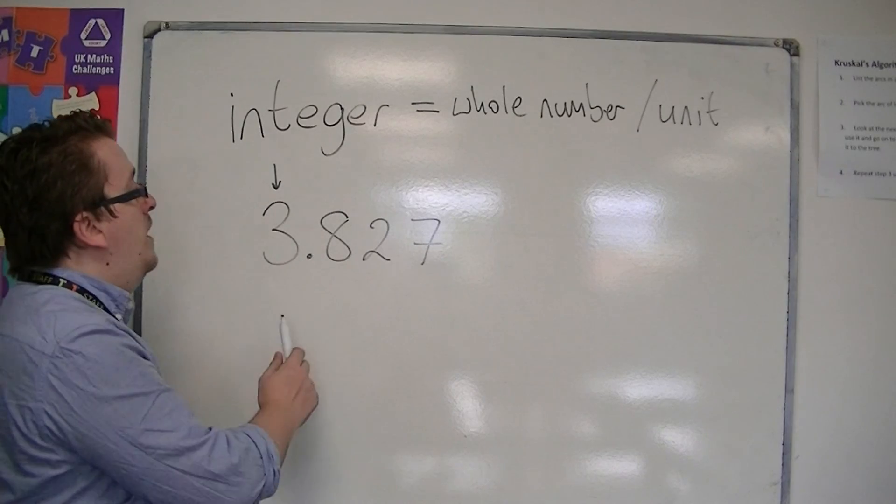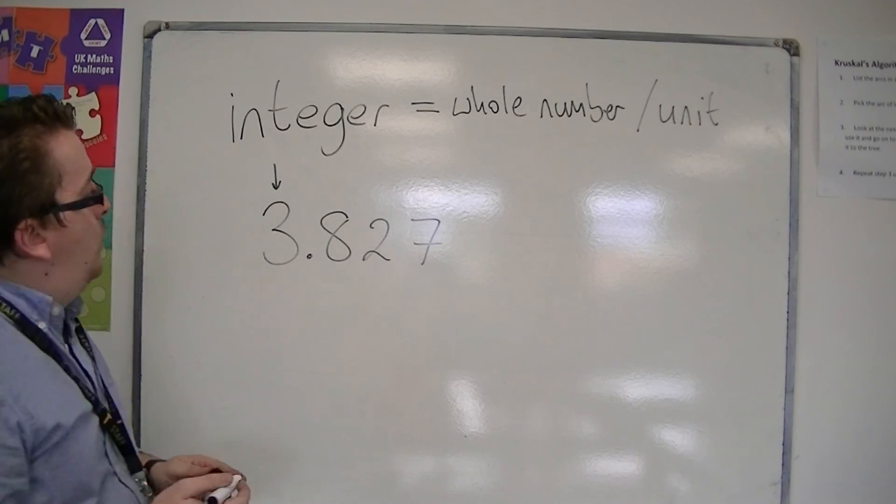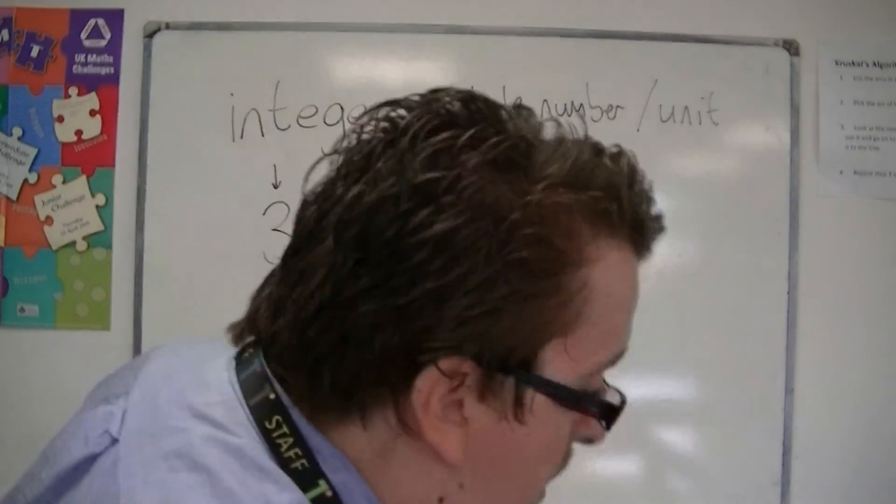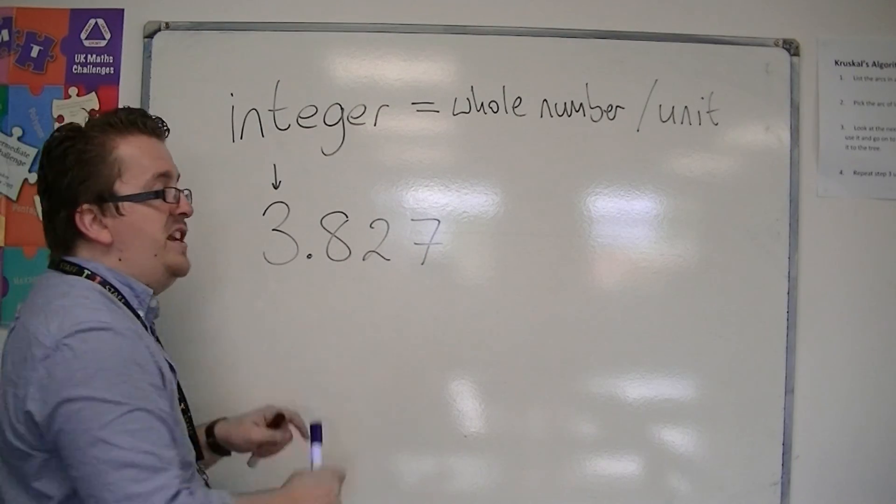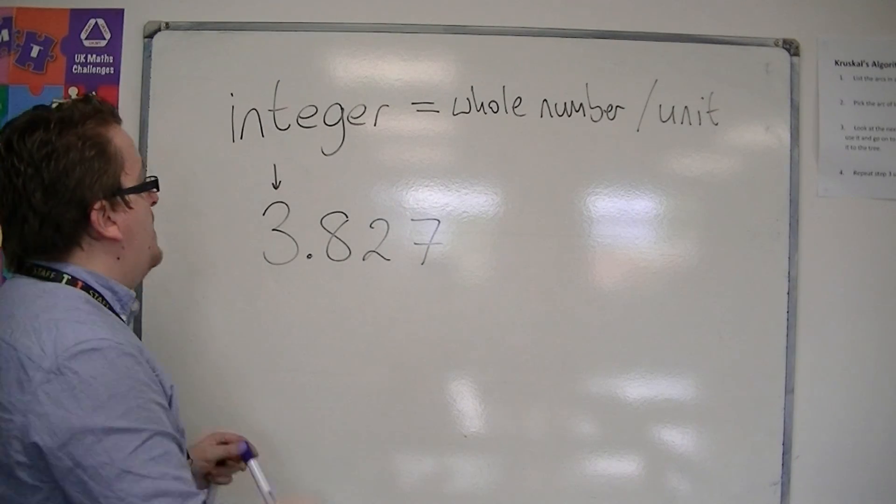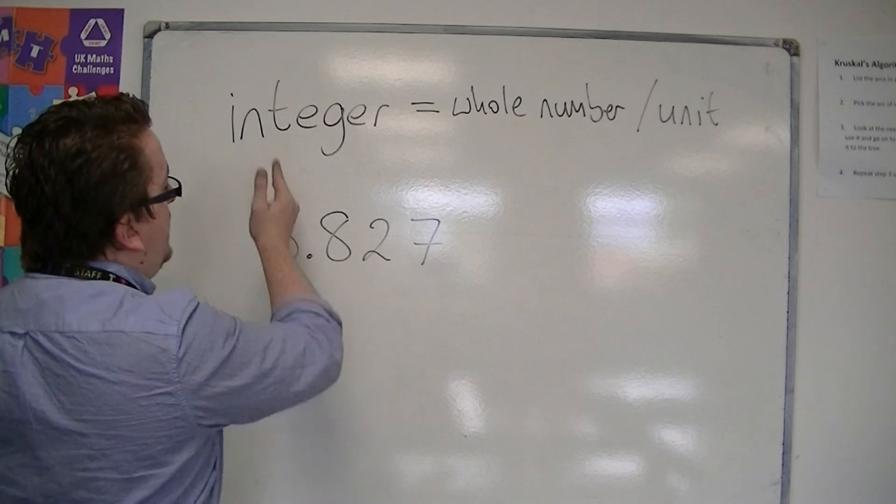These are where we're looking at the whole numbers. So if I'm going to round this to the nearest integer, we're looking at the unit's column.